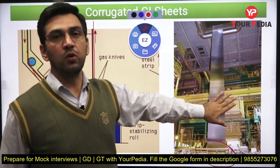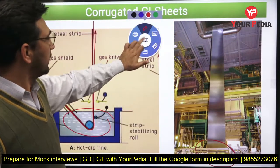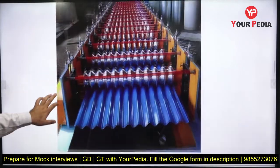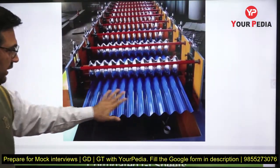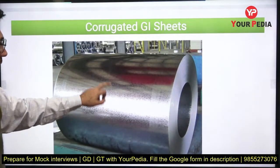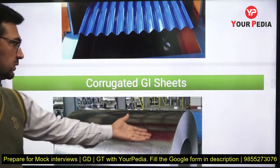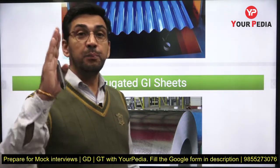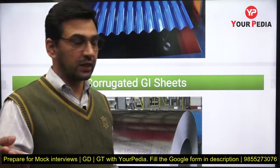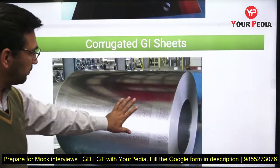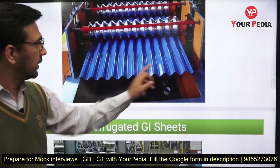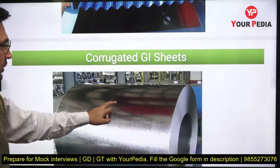Once the coating is produced, it is allowed to cool and coiled again. The sheet with a coating of zinc is called a galvanized iron sheet. If you add a color coating, it is called a pre-painted galvanized steel sheet — meaning you have done the painting of a particular color, so it is pre-painted.